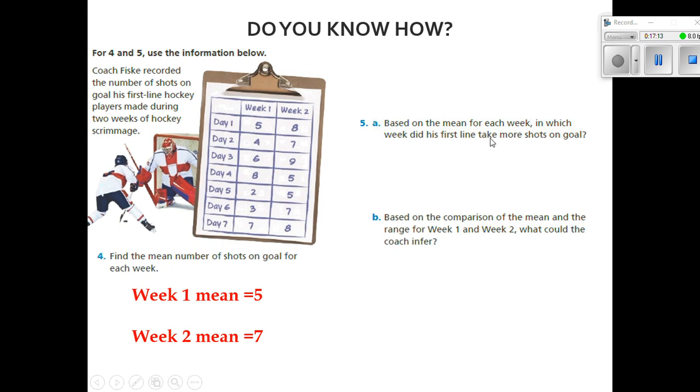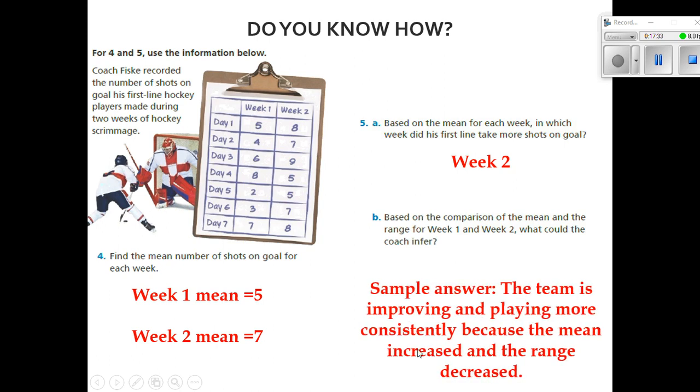Number 5A says based on the mean for each week, in which week did his first line take more shots at goals? Well based on this, I would have to say that week 2, they took a lot more shots. And based on the comparison of the means and the range for week 1 and week 2, what could the coach infer? Well, the team is improving and playing more consistently because the mean increased and the range decreased. We can see that the mean increased. What does it mean by the range decreased? Let's look over here. We see that on day 4 they made 8, but on day 5 they made 2. Remember, it's the biggest number minus the smallest number out of all the data. And that 8 minus 2 is 6. So that is going to be a range of 6 for week 1. But look at week 2. The highest number was 9 and the lowest was 5. 9 minus 5 is 4. And that means in week 2 the range was only 4. That means the range decreased and they're getting better and better.